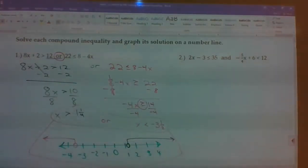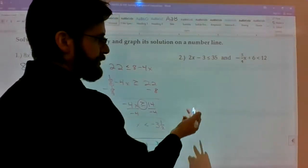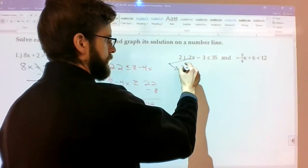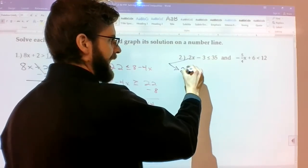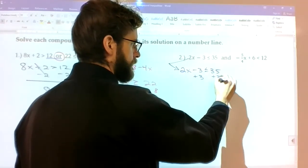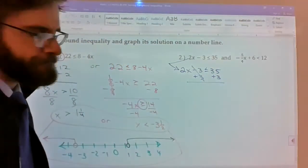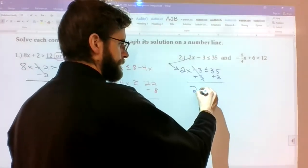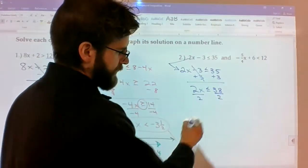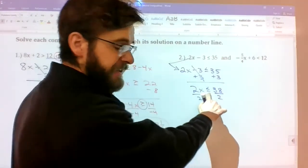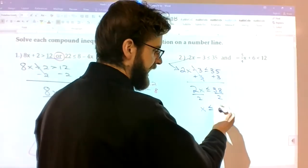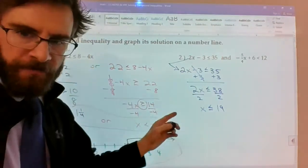Let's try number 2. Number 2, again, you've got two situations, so you're solving two inequalities separately. I'm going to add 3 to both sides. And then divide both sides by 2. So x is still less than or equal to because we did not divide by a negative. 19, half of 38 is 19. So that's part 1 of our solution.